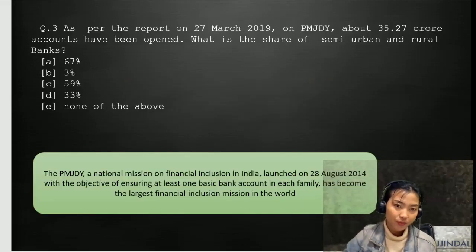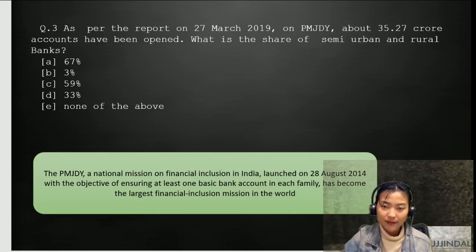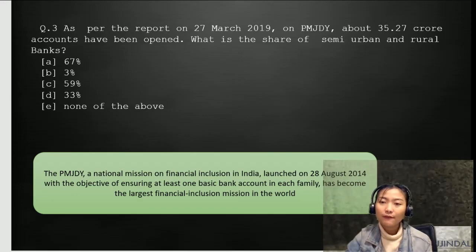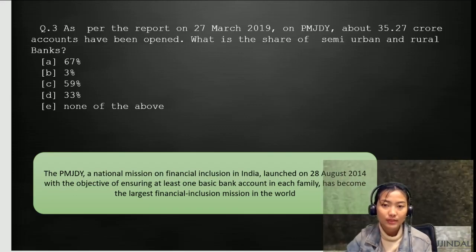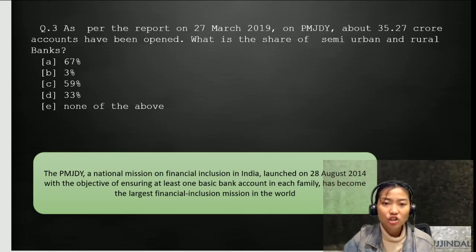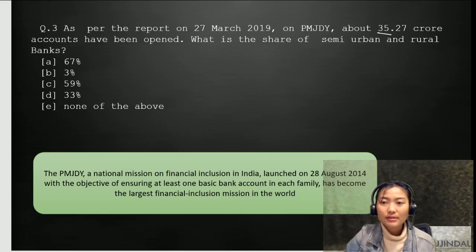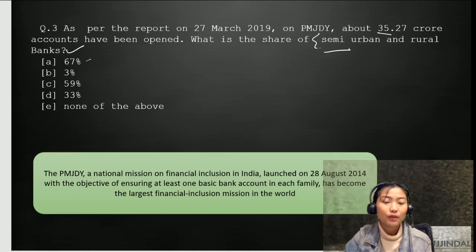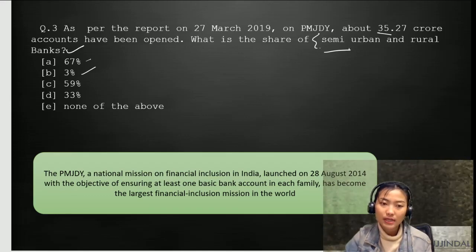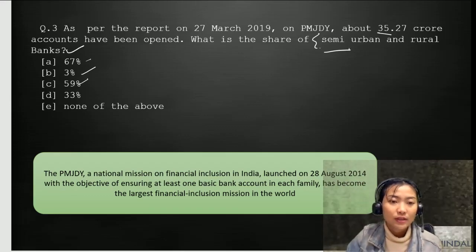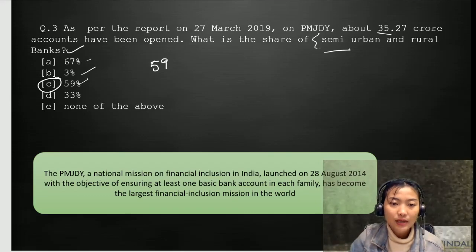Question number three: as per the report, on 27 March 2019, under Pradhan Mantri Jan Dhan Yojana, about 35.27 crore accounts have been opened. What is the share of semi-urban and rural banks? The options are A: 67%, B: 3%, C: 59%, D: 33%, E: none of the above. The right answer for this is option C, which is about 59%.